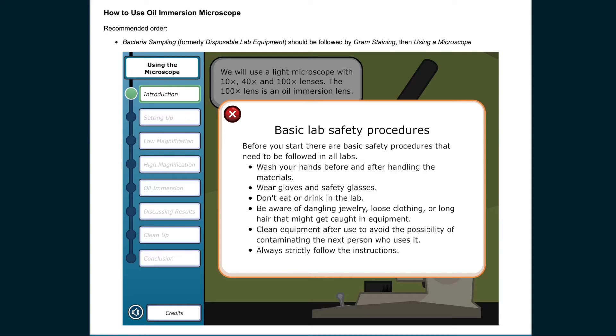Basic Lab Safety Procedures. Before you start, there are basic safety procedures that need to be followed in all labs. Wash your hands before and after handling the materials. Wear gloves and safety glasses. Don't eat or drink in the lab. Be aware of dangling jewelry, loose clothing, or long hair that might get caught in equipment. Clean equipment after use to avoid contaminating the next person who uses it. Always strictly follow the instructions.